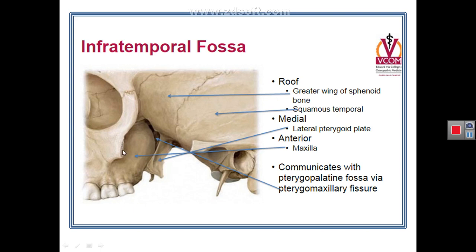With the zygomatic arch removed, you can also see the posterior aspect of the maxilla. Behind the maxilla is a fissure called the pterygomaxillary fissure, because the adjacent bone is the pterygoid process of the sphenoid. The space deep to this pterygomaxillary fissure is called the pterygopalatine fossa, which will be studied later.